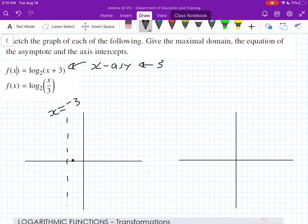And it does ask for axis intercepts. So just remember, axis intercepts, so the y-intercept, that's when x is equal to 0. So this is actually going to be equal to log₂(3). So just be aware, you don't have to put a number on it. You can just leave it as log₂(3) when x is equal to 0.